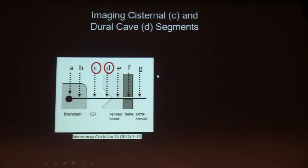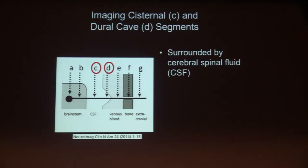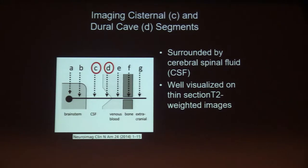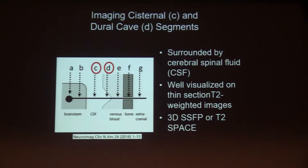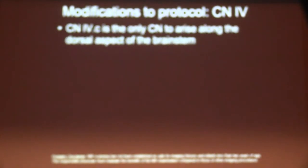The C and D segments are surrounded by cerebral spinal fluid in the subarachnoid space, and for this reason they are well visualized on thin-section T2-weighted imaging, no matter which technique is applied. You can use 3D steady-state free precession imaging — CISS, Fiesta, balanced fast field echo — or a more typical spin-echo T2-weighted sequence like T2-SPACE, which will also allow visualization of the cisternal and dural cave segments.